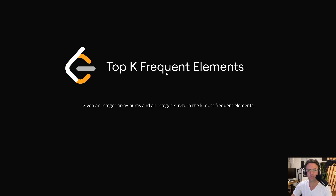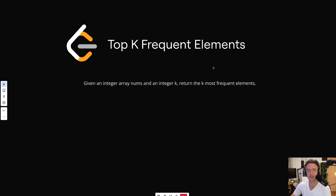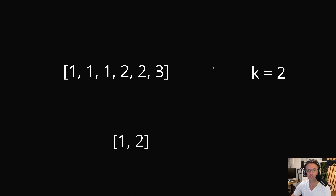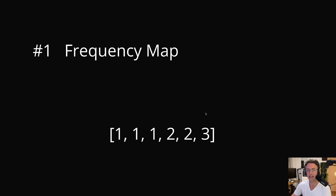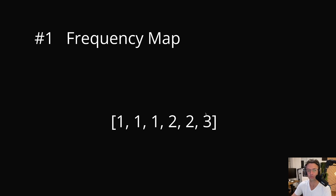How exactly is this going to work? Let's take a look at an example. LeetCode is going to give us an array with a bunch of numbers inside of it, and they're also going to give us K. K pretty much means the number of frequencies that you want to return. So the top most frequent numbers are going to be 1 and 2, because there are three 1s, two 2s, and only one 3. Here's how we're going to build this algorithm — it comes in three steps.